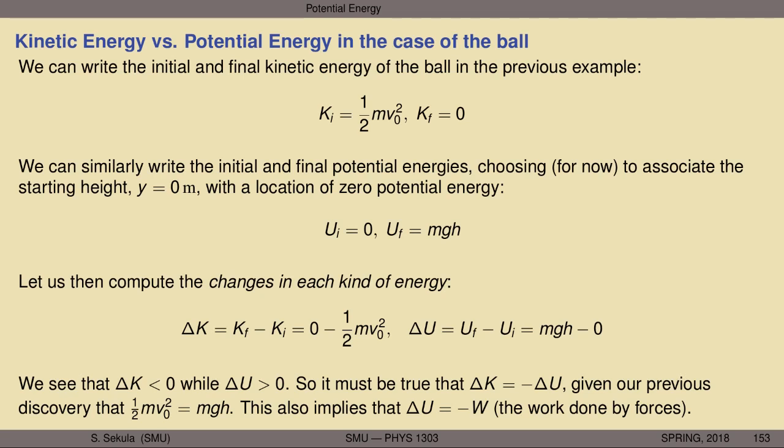It must be true that changes in kinetic energy equal the negative of changes in potential energy. And because changes in kinetic energy equal the work done by forces on an object, this implies that changes in potential energy are equal to the negative of the work done by the forces. So we now have relationships between changes in kinetic energy, changes in potential energy, and the work-kinetic energy theorem.